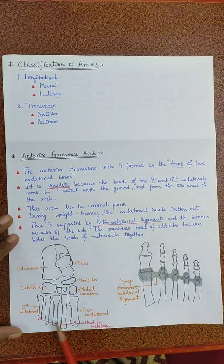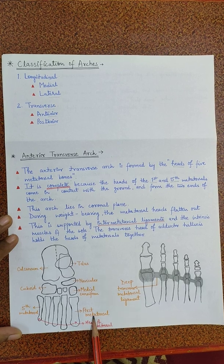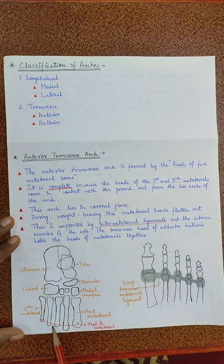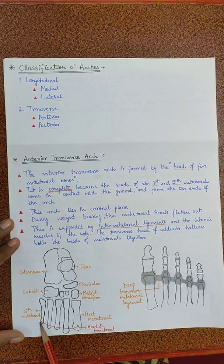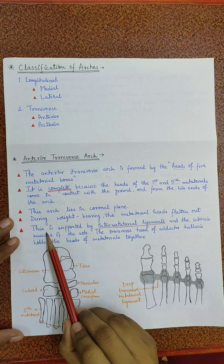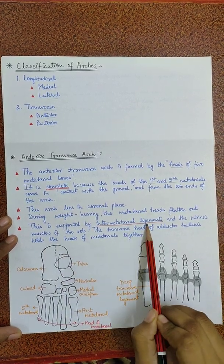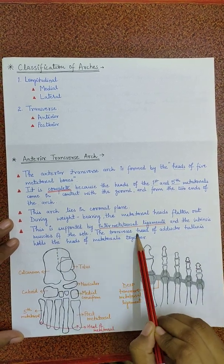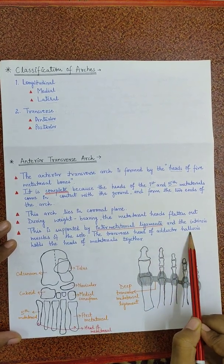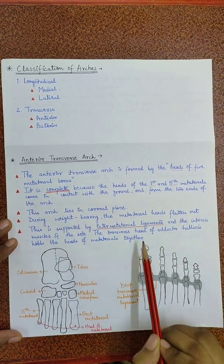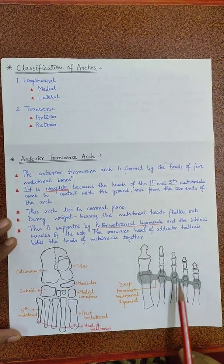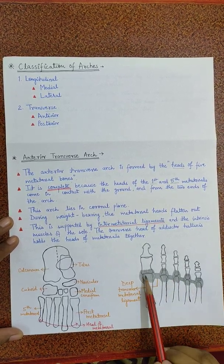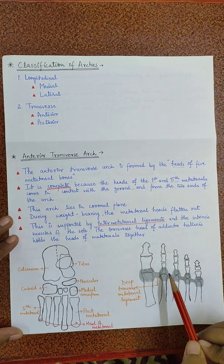In the diagram, you can see this is the first metatarsal, this is the fifth metatarsal and this is the head of all the five metatarsals and they are forming the anterior transverse arch. This arch is supported by inter-metatarsal ligaments and the intrinsic muscles of the sole. The transverse head of adductor hallucis holds the heads of metatarsals together. These are the deep transverse metatarsal ligaments which are holding the metatarsal joints and help in forming the anterior transverse arch.